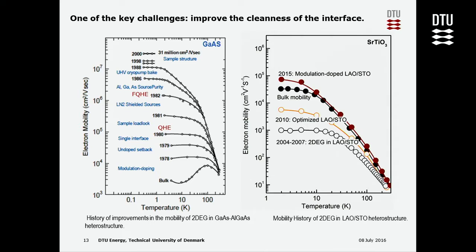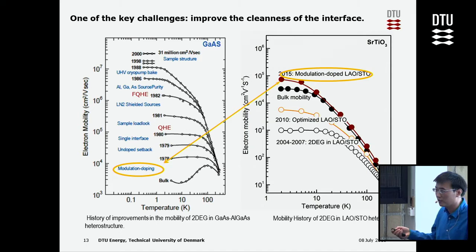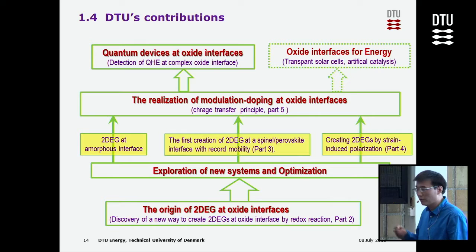This made it quite difficult to use practically. We are among the few groups in the world that can make the mobility higher than the bulk mobility. Interestingly, in 2015 we found that a technique called modulation doping can also be applied at this interface — a technique which greatly improved semiconductors in the 1980s.